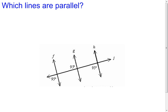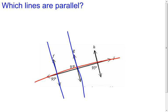In the next example, we have a picture that gives us the measures of three angles, and I want to know which of these lines are parallel. To do this properly, you can only look at two lines and one transversal at a time. Line j is going to have to be the transversal each time. First I'm going to check whether line f and line g are parallel.